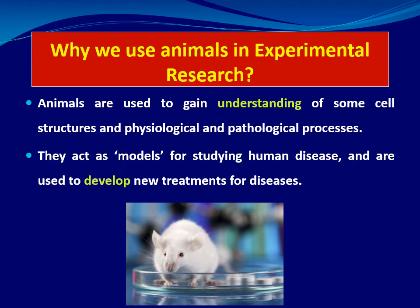Why do we use animals in experimental research? Animals are used either to understand the pathophysiology of certain diseases — first investigating the physiology of various systems and cells, then the pathophysiology — or as a model for studying human diseases and to develop new treatments for these diseases.